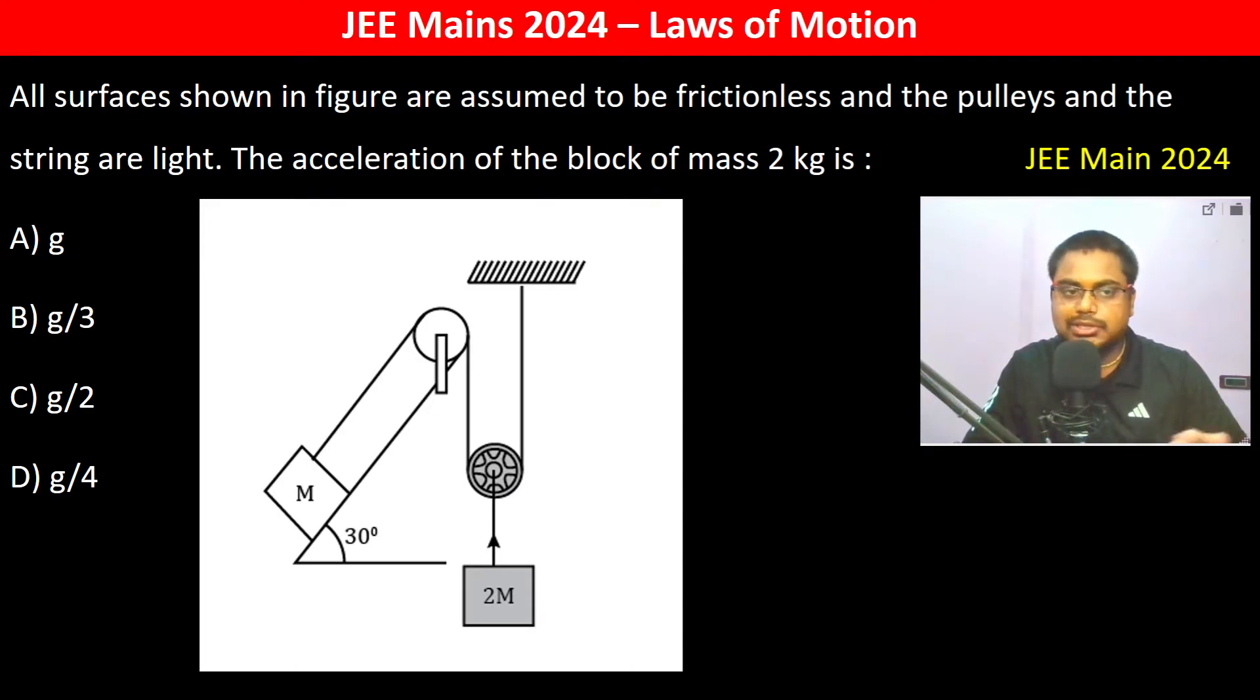All surfaces are frictionless and pulleys and string are also light, that is massless. Therefore if we assume tension here is T, here also T, so here the tension is going to be 2T and here the tension is going to be T.